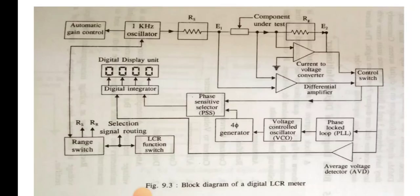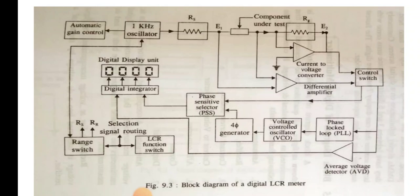The source resistor RS is connected to virtual ground. Because RS is connected to virtual ground, the presence of RG (the range resistor) does not change the value of the current flowing through the component under test. So the range resistor does not affect the current through the component under test.